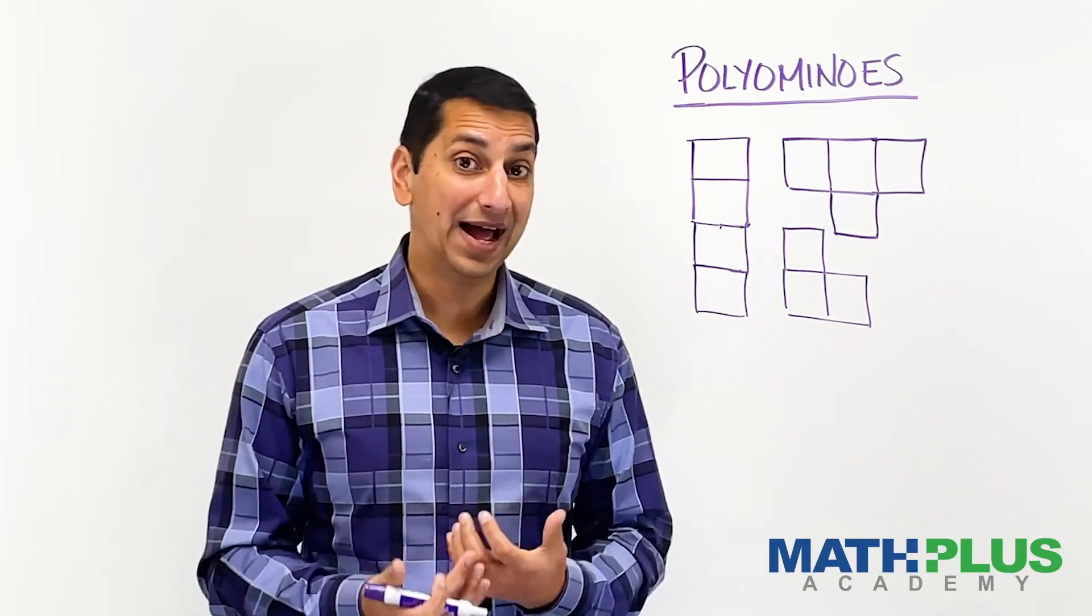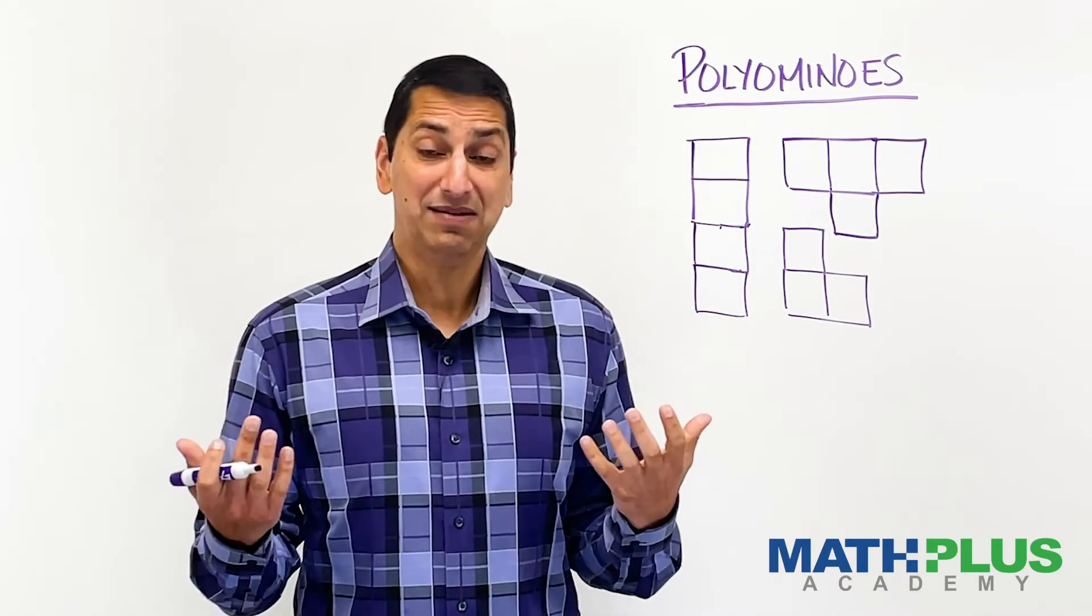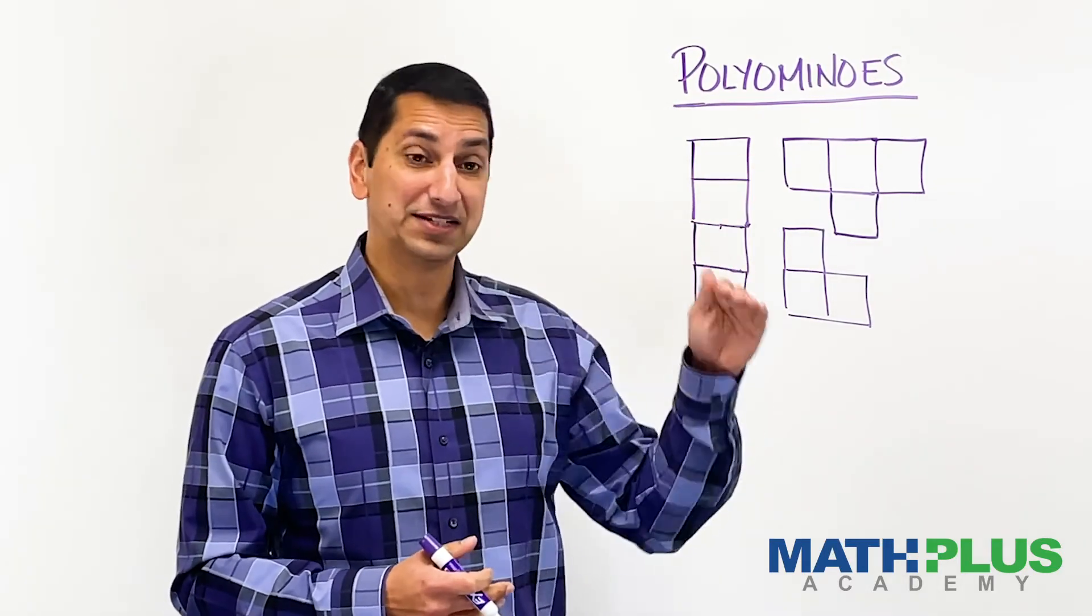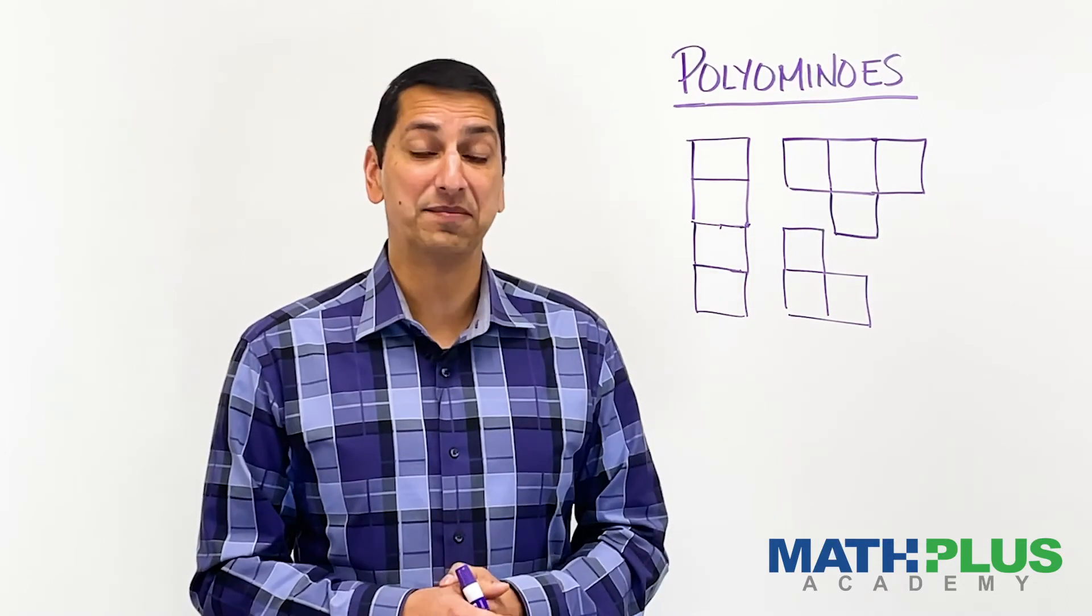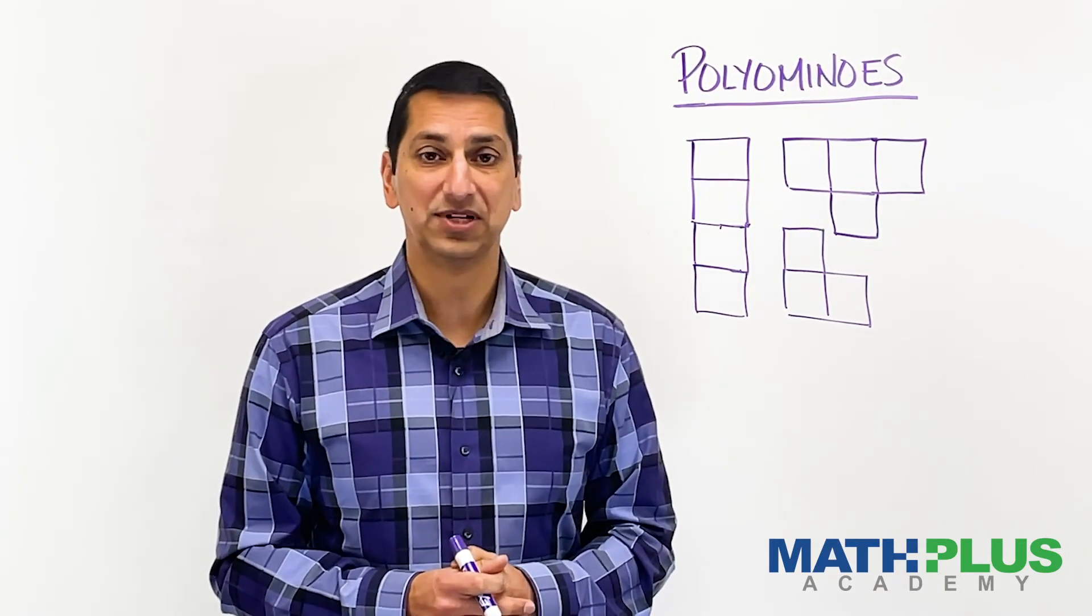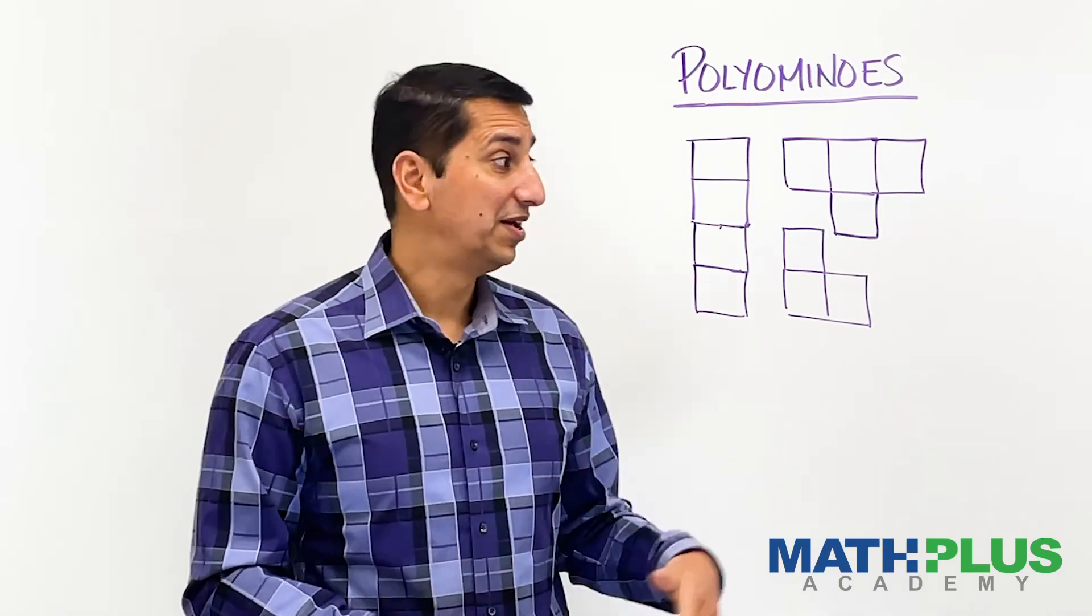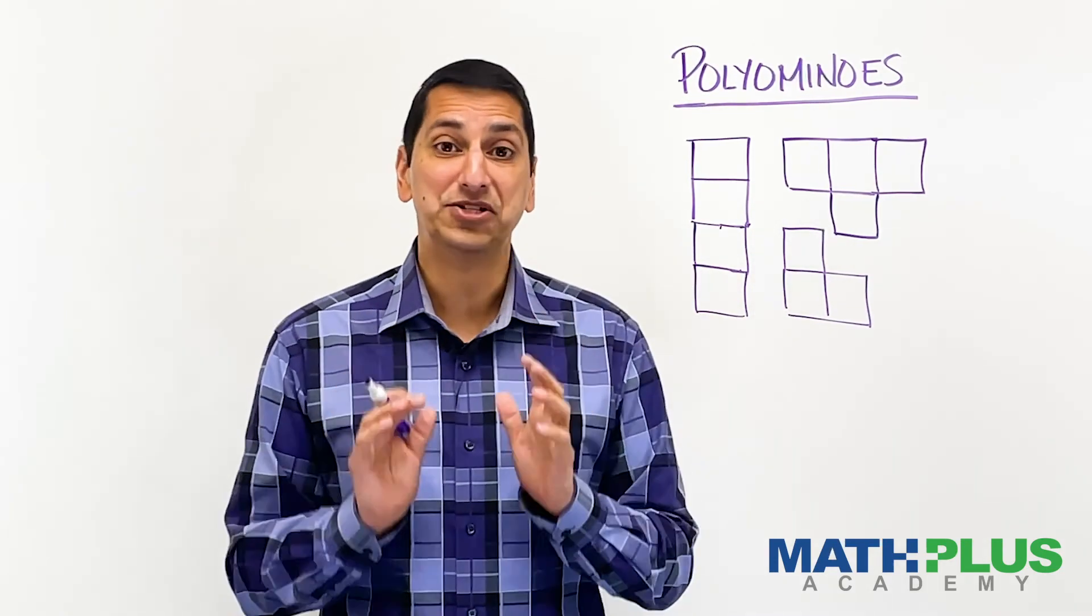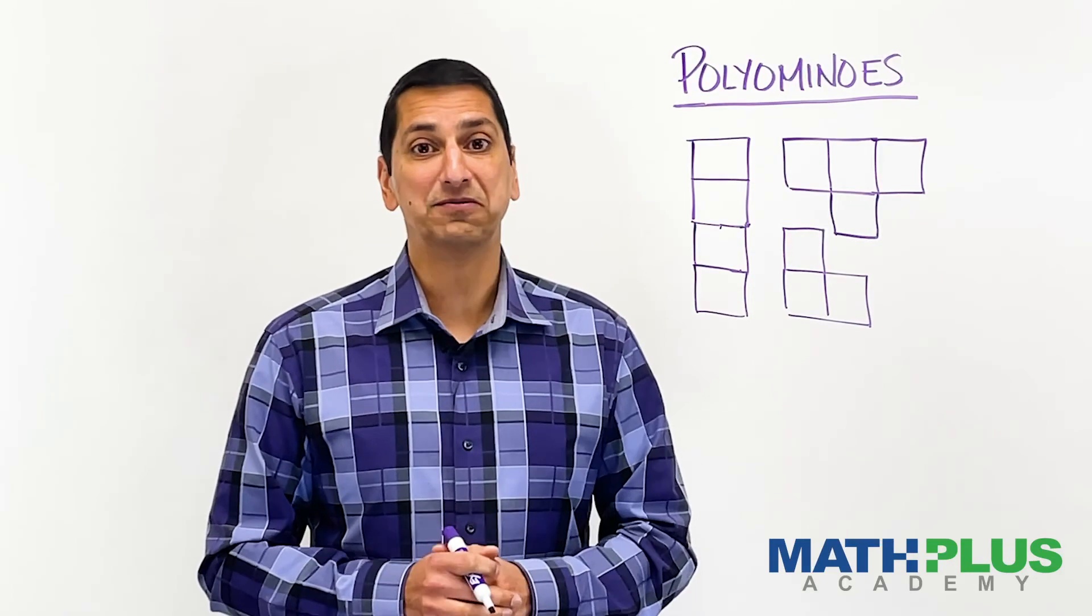And lastly, there may be a pattern of how these things sequence, and you might be able to make a guess at how many septominoes there are, which are made out of seven squares. So, as always, play around with this and just have fun playing with math.